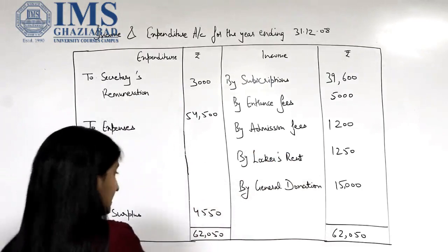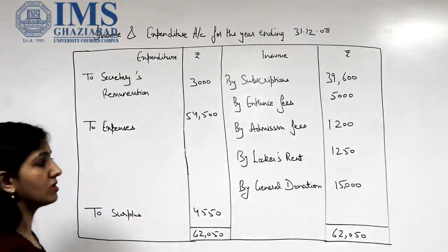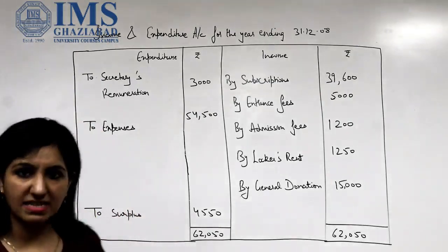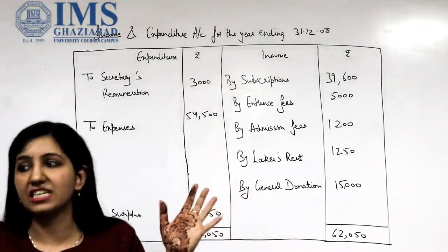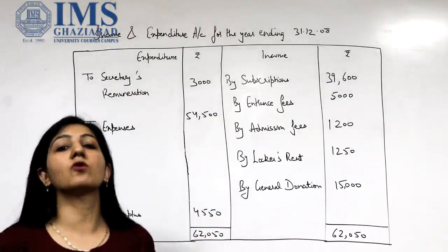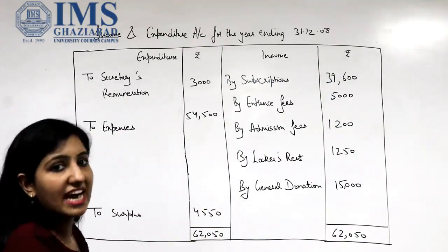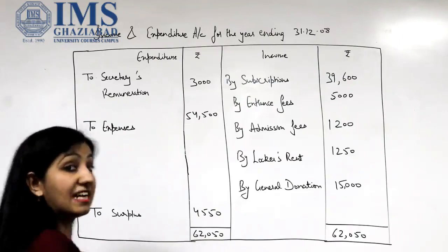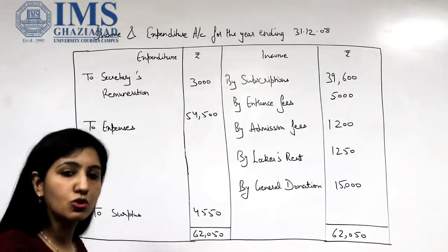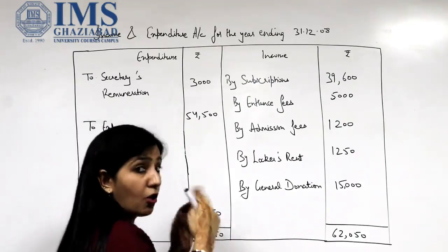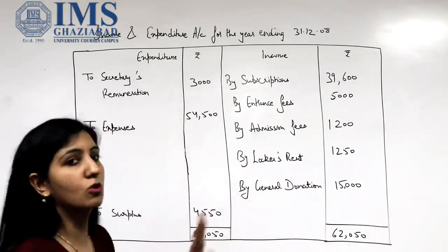Looking at the receipt and payment account and the income and expenditure account, some items might be missing here. What are those items? Opening cash and closing cash are missing here. Why? Because that was a receipt and payment account — it was recording all the cash that has flowed in and all the cash that has flowed out, and it also recorded the opening and closing cash balances. Whereas this is not like a cash book; this is like a P&L. Does a P&L record opening cash or closing cash? No. All those figures flow into a balance sheet and are shown there.